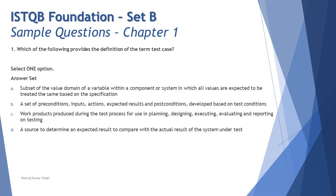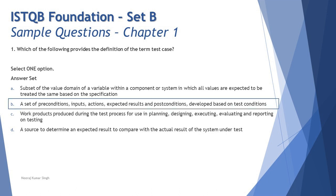Option D — 'a source to determine an expected result to compare with the actual result of the system under test' — is the definition of a test oracle, used to compare expected with actual results, but it is not the definition of a test case. So the right answer here is B: a set of preconditions, inputs, actions, expected results, and post conditions developed based on test conditions.